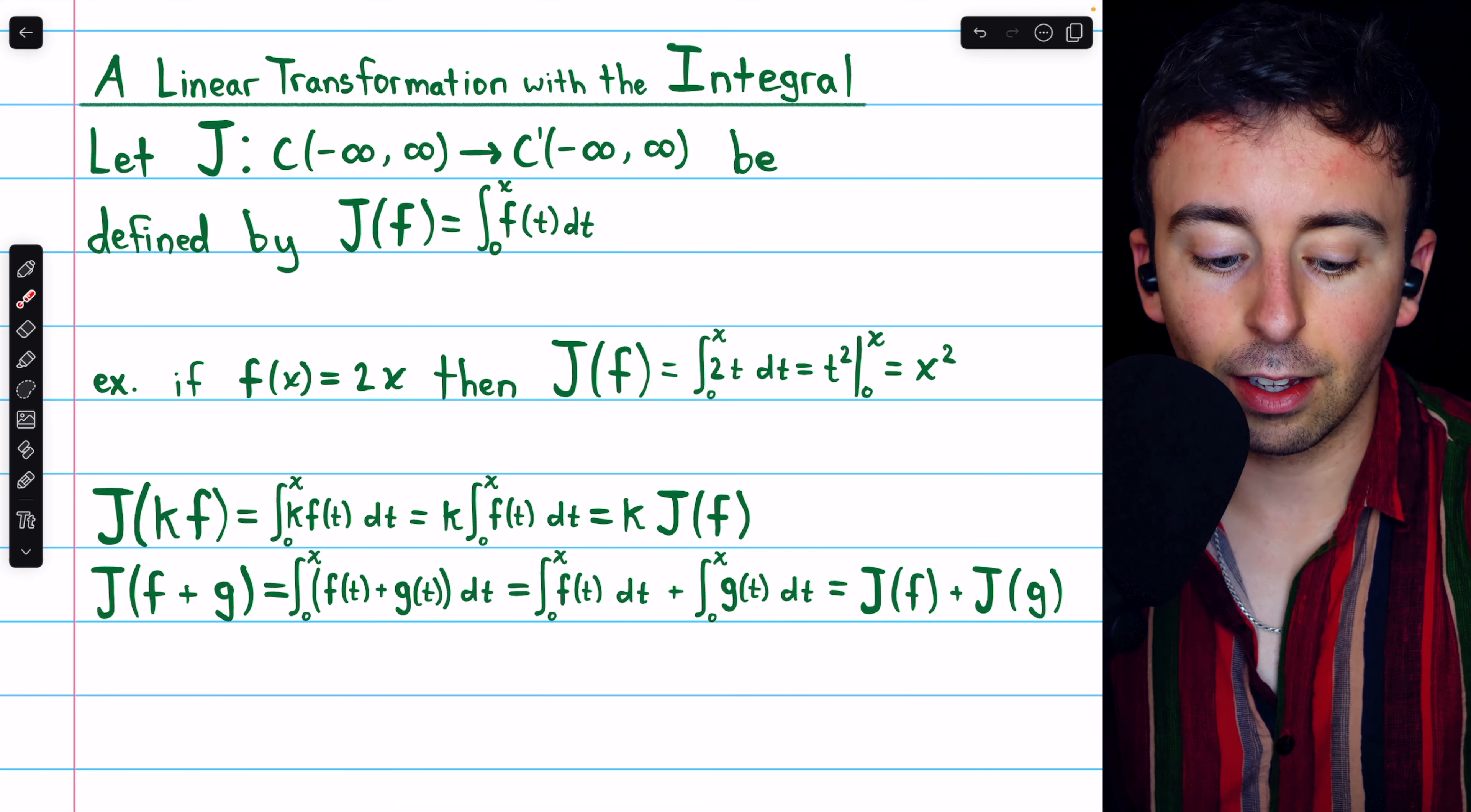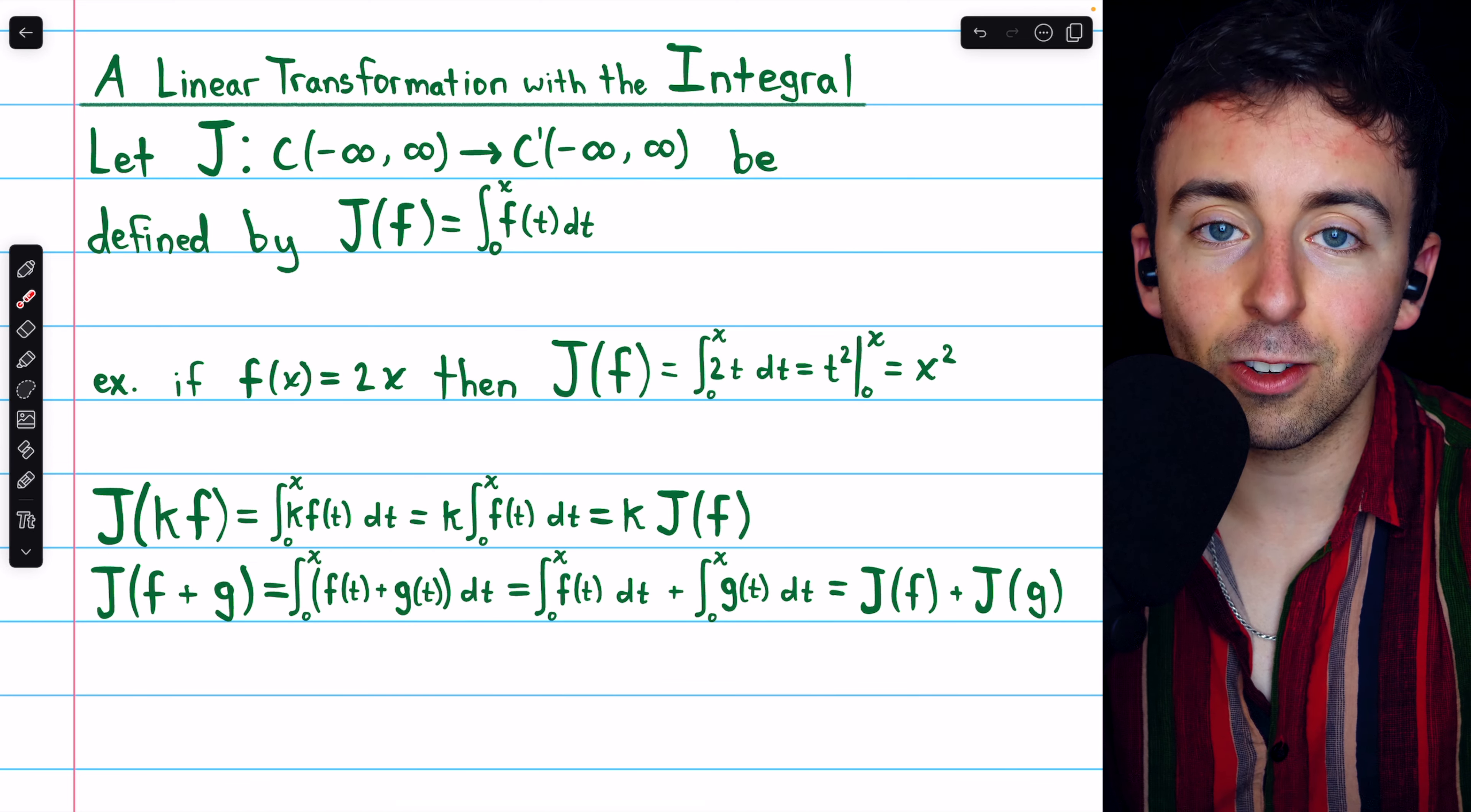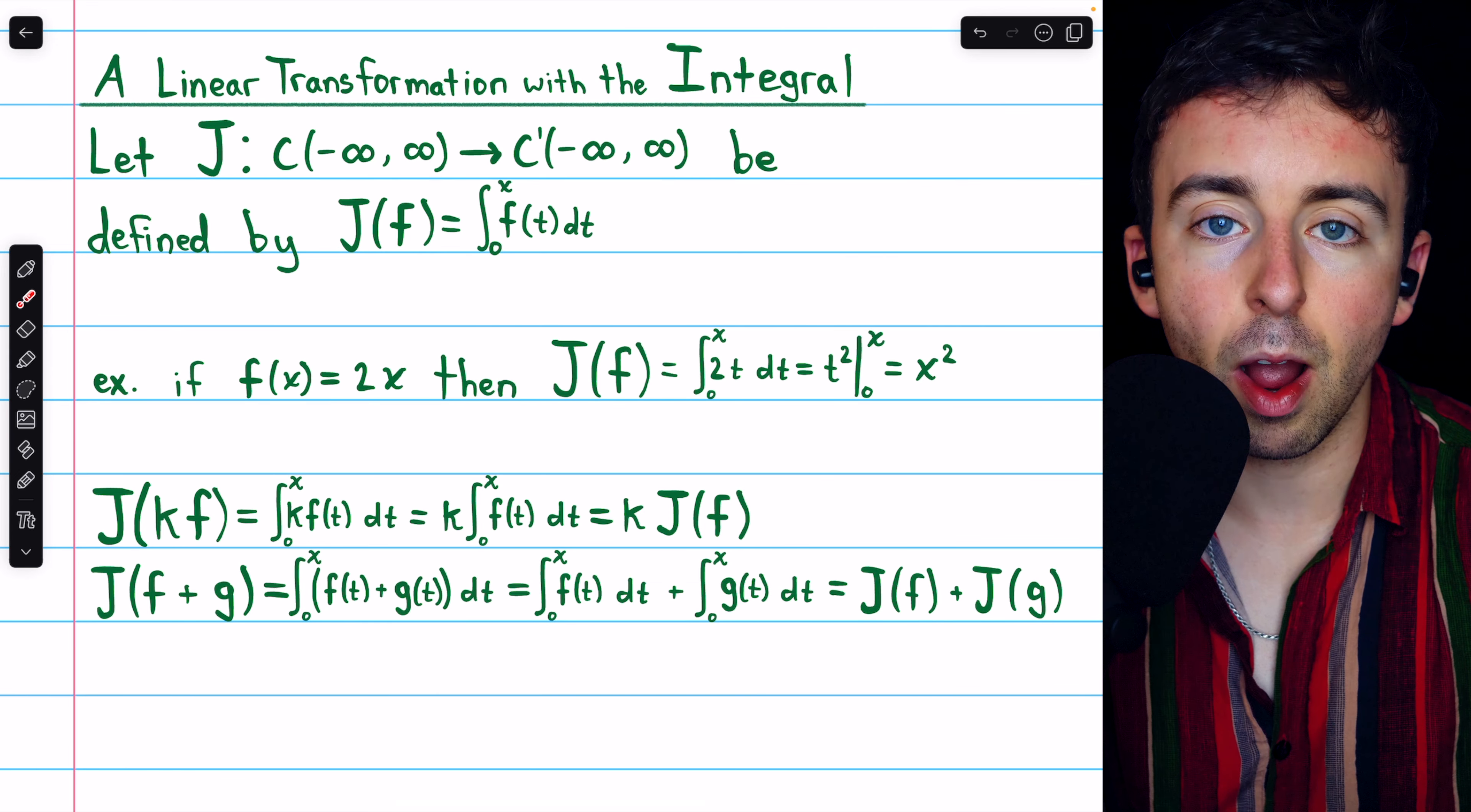So we can pull a scalar out of this transformation. It satisfies the homogeneity property. Similarly, it satisfies the additivity property. J of f plus g would be the integral of f of t plus g of t from 0 to x. And we can split an integral across addition. So we could write this as the integral of f of t plus the integral of g of t. So J of f plus J of g.